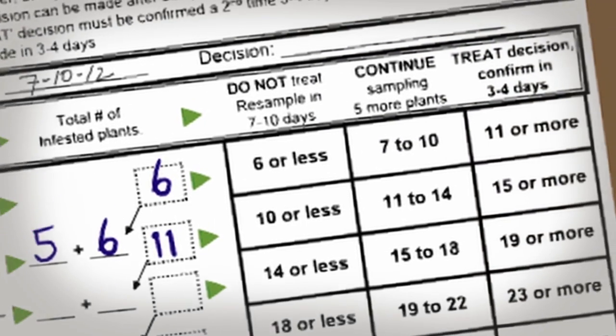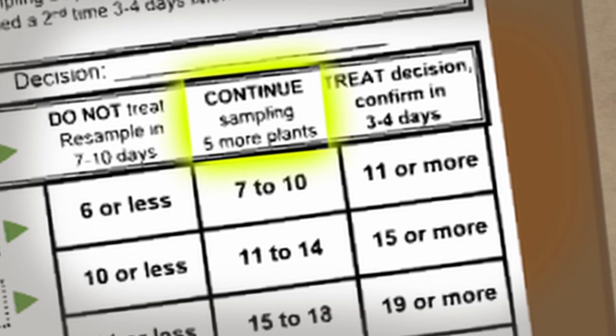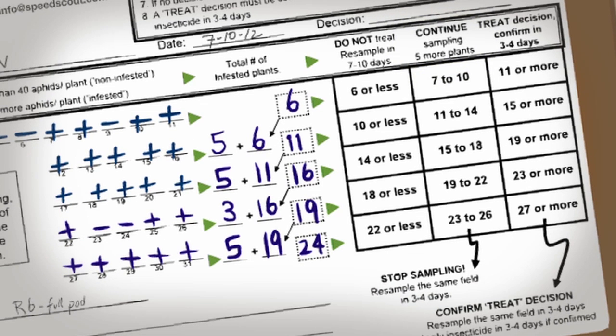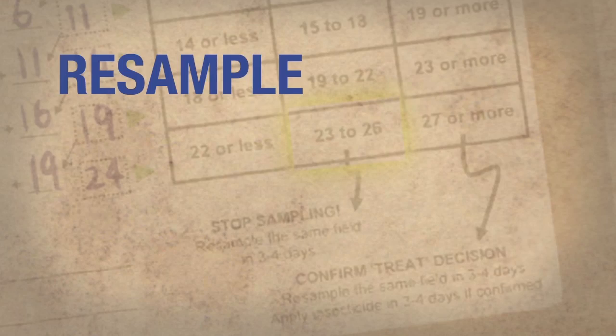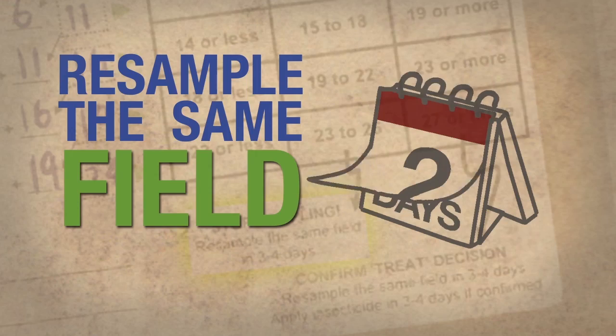If no decision is reached, sample additional sets of 5 plants until 31 plants are sampled. Remember to always use the total number of plants sampled to make a decision. If no decision can be made after sampling 31 plants, re-sample the same field in 3 to 4 days.